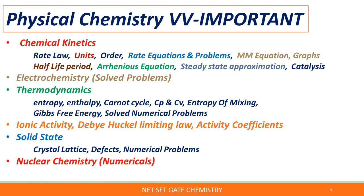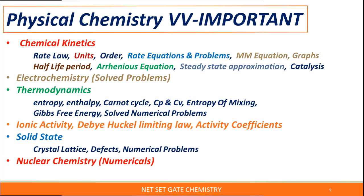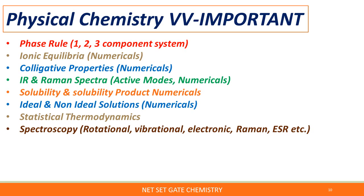In solid state, crystal lattice defects and numerical problems — density problems and calculating the mass of a particular crystal lattice — will be asked. Nuclear chemistry numericals — half-life period based on decay constant — will ask for the age of wood or some object given for the numerical. Phase rule: focusfully cover one, two, and three component systems, degrees of freedom, and all phase rule content. In ionic equilibria, focusfully solve numerical problems, and cover colligative properties numericals.